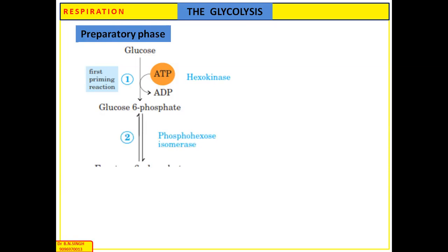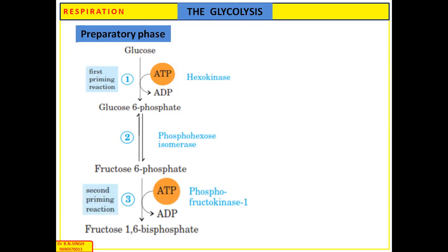Glucose-6-phosphate is converted into its isomer fructose-6-phosphate in the presence of the enzyme phosphoglucose isomerase. Fructose-6-phosphate then consumes one ATP in the presence of the enzyme phosphofructokinase to form fructose-1,6-bisphosphate.